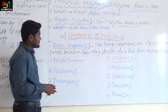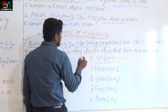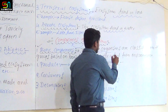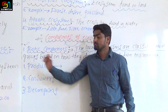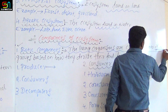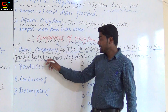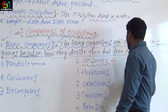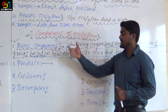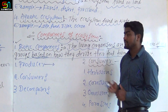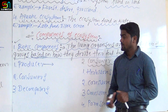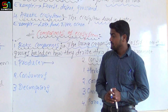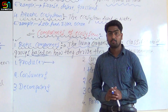All living organisms belong to the biotic component of an ecosystem. Living organisms are classified into three groups based on how they derive their food from nature. There are three categories: first, producer; second, consumers; third, decomposers.